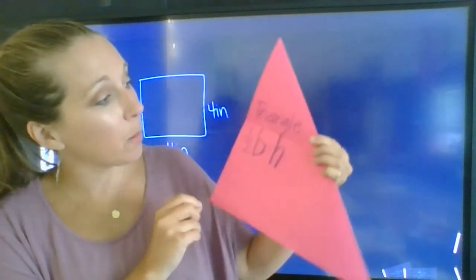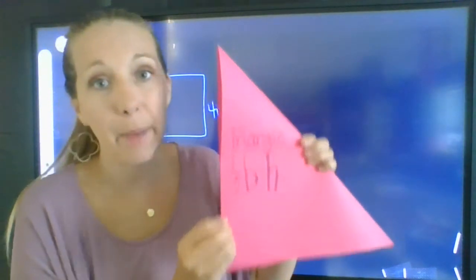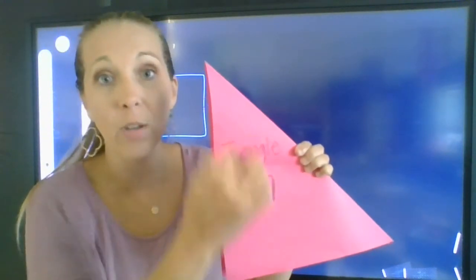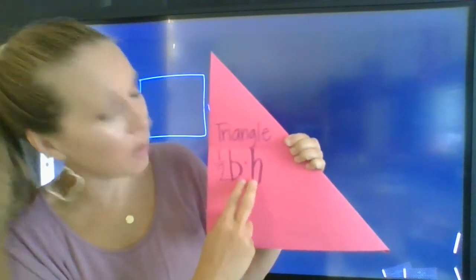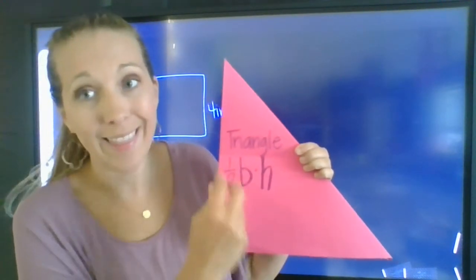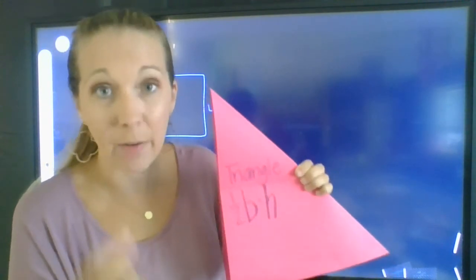With a triangle, you can divide it in half and we get one-half base times height. So you can take half of the base or half of the height. Either one is completely fine. You could even multiply the base and the height and then take half. Just remember if you're taking half, you're dividing by two.